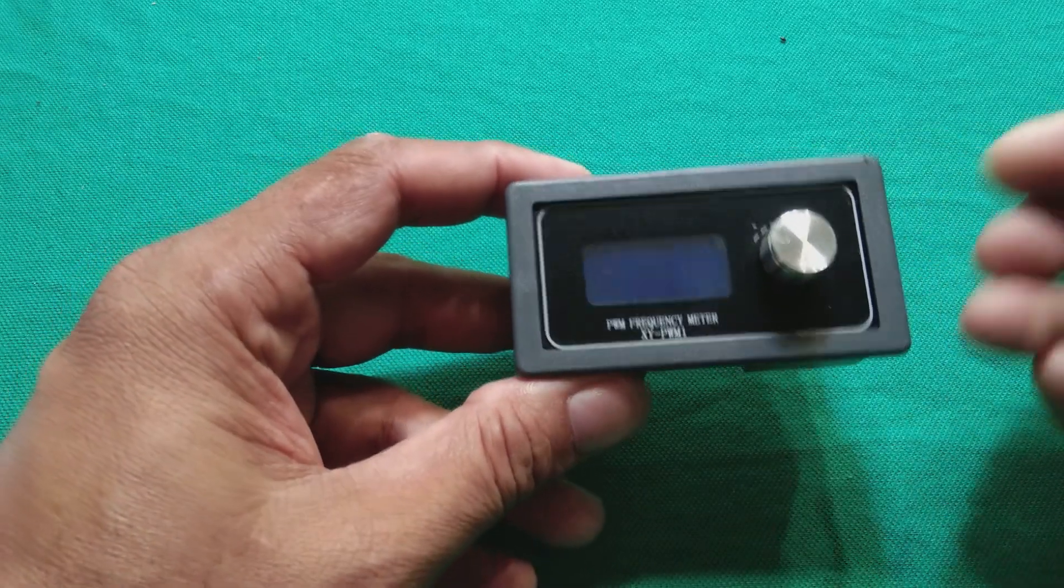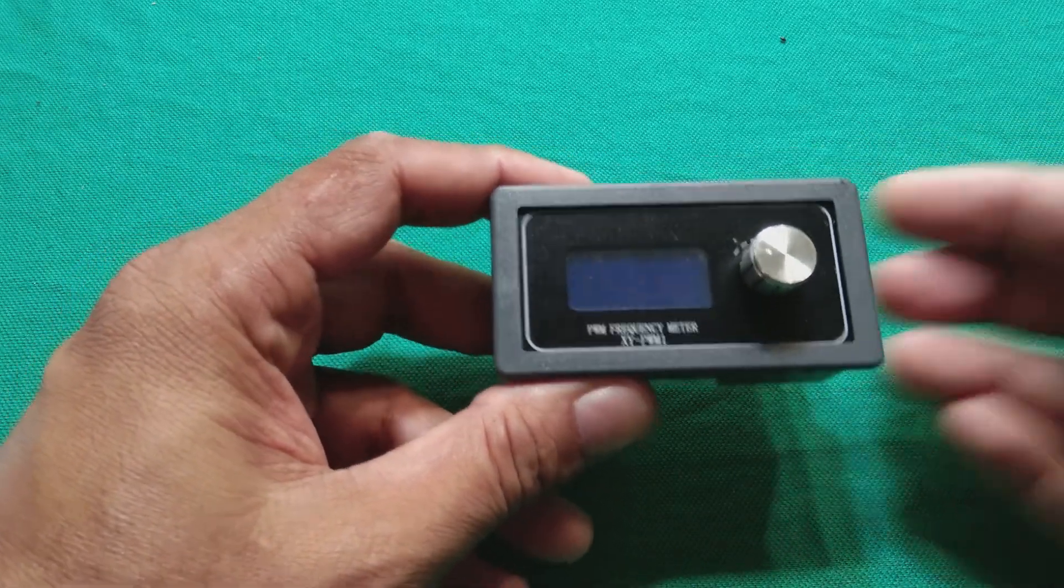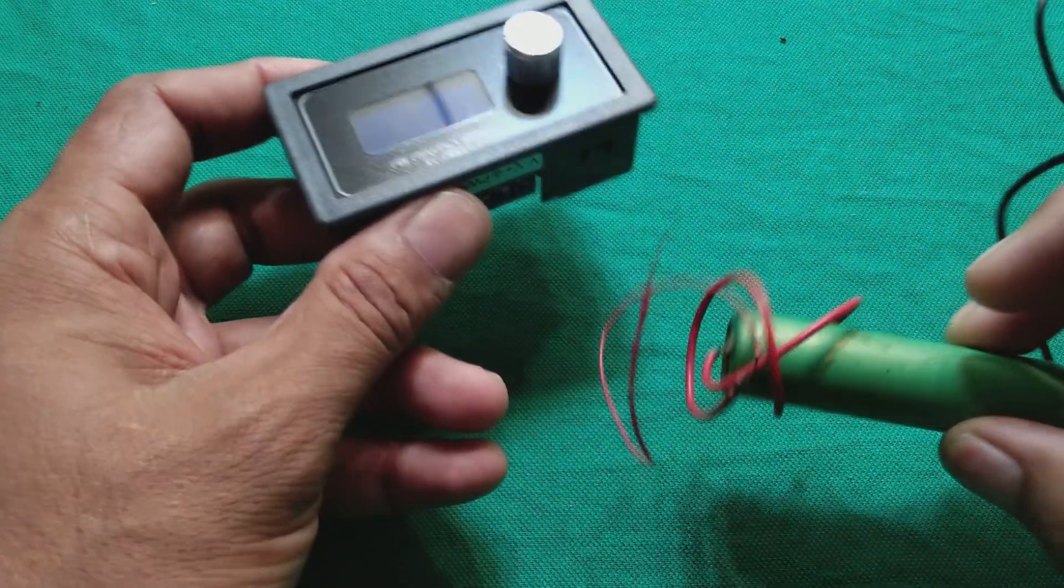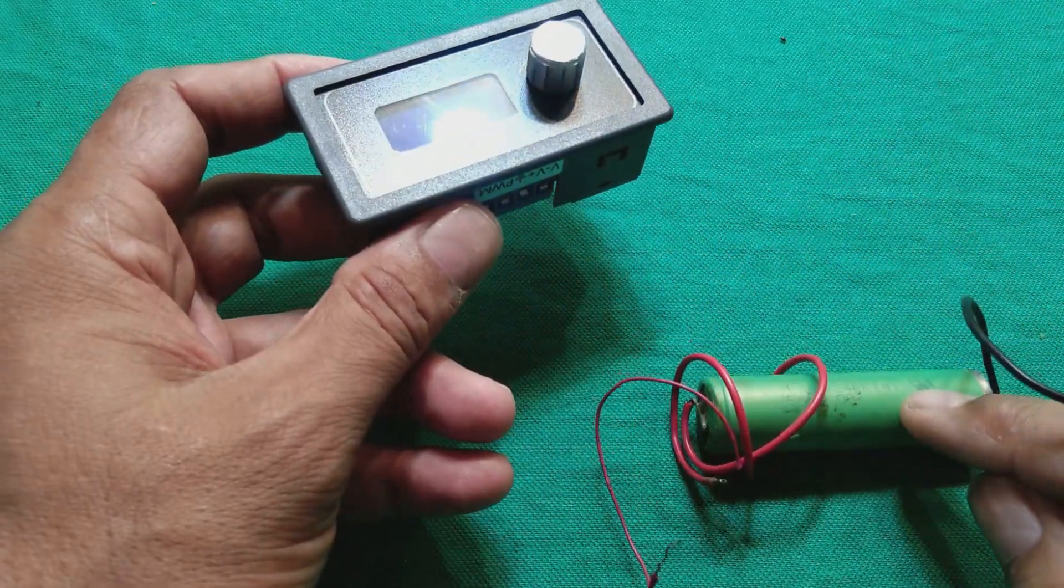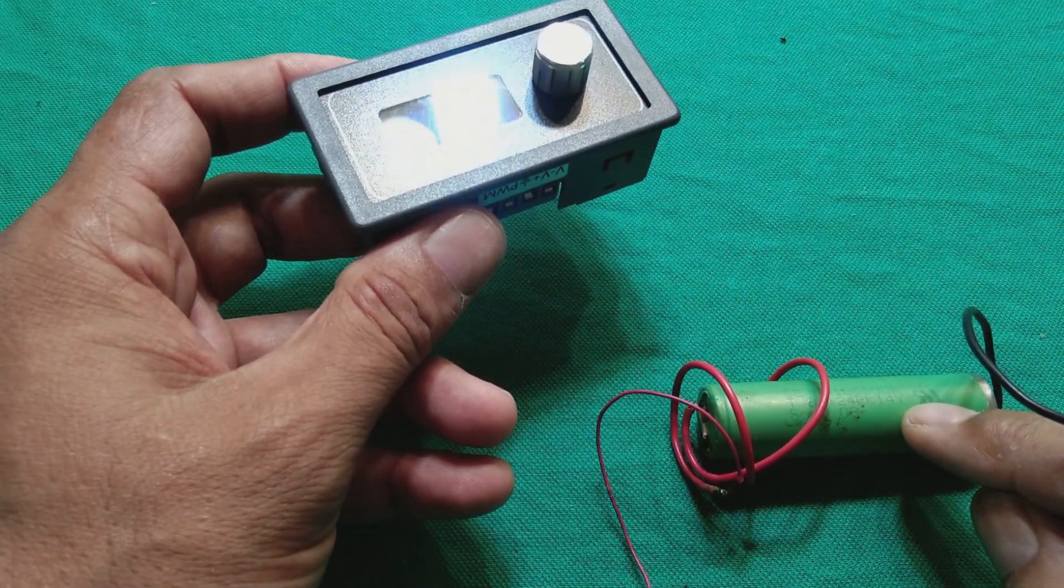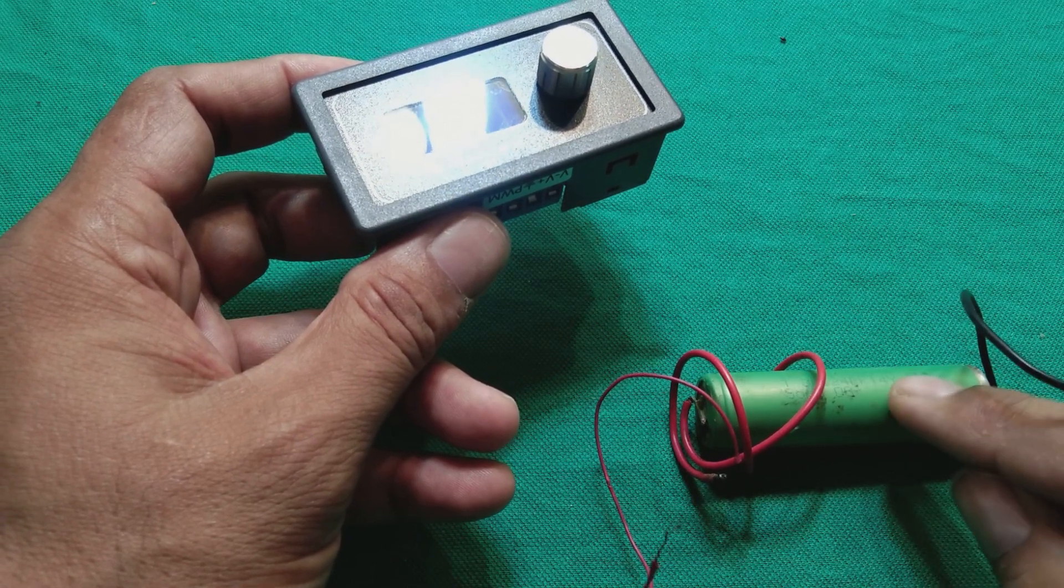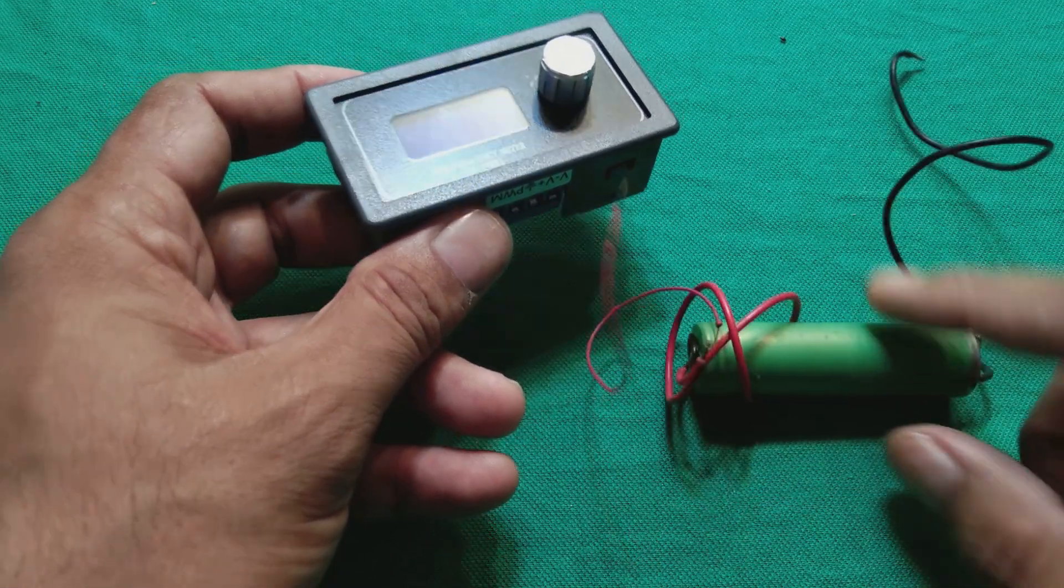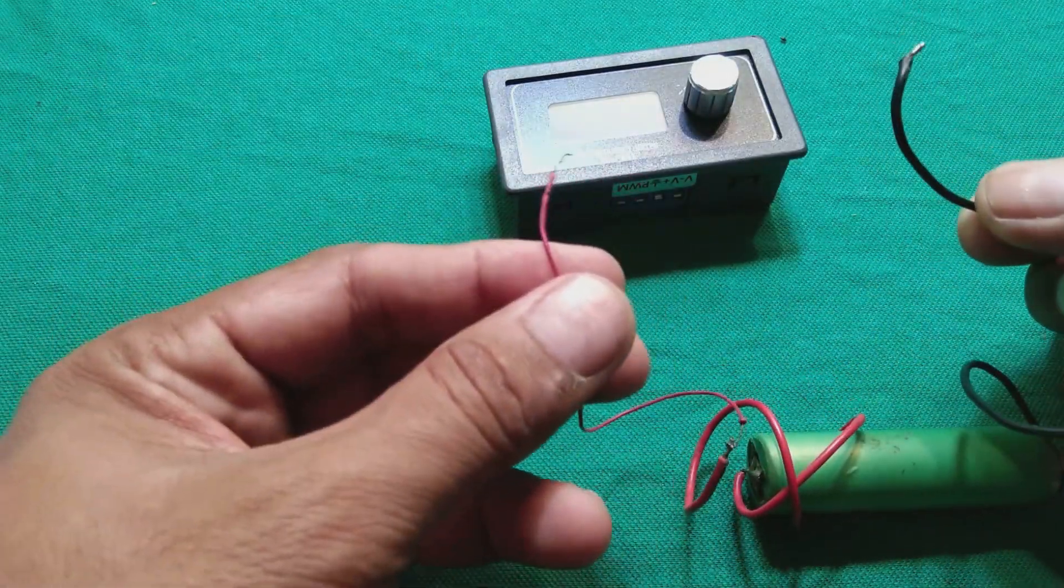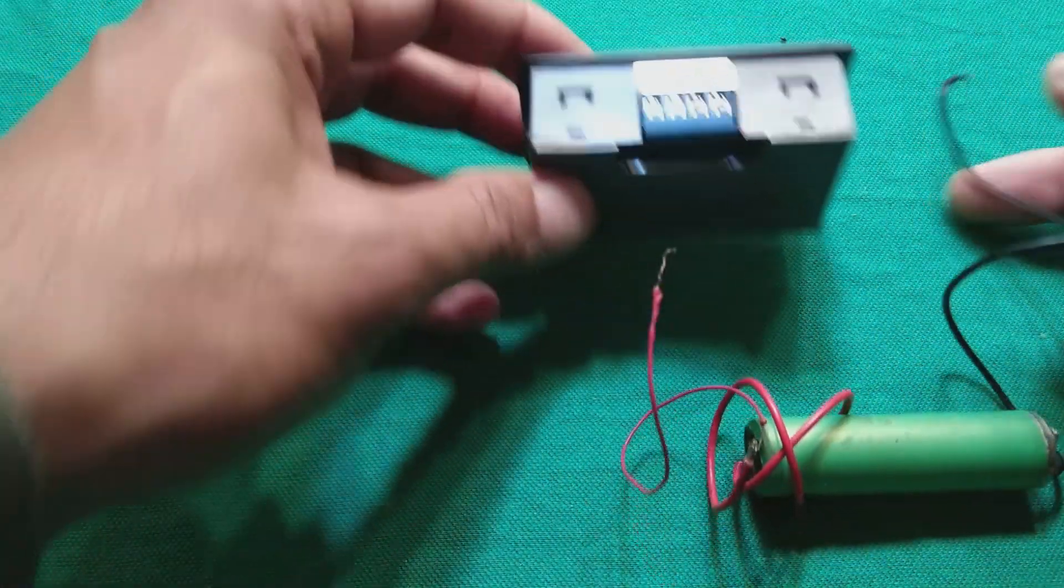I'm going to test it. I have this battery which is 3.7 volt. This is a very common battery, 18650 battery used in computer applications. We are going to connect it. There are two wires, positive and negative.